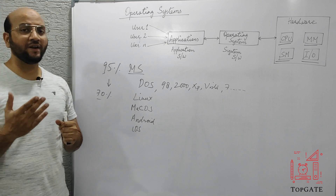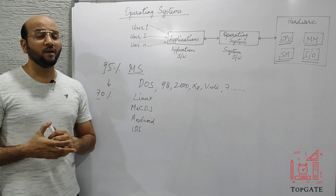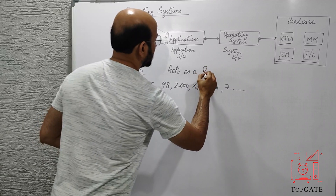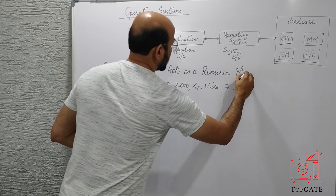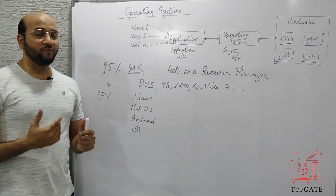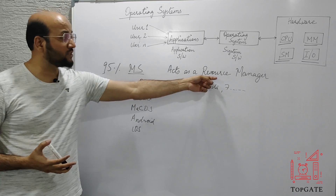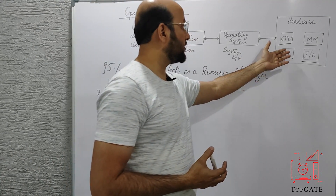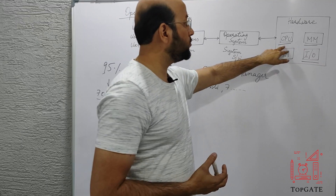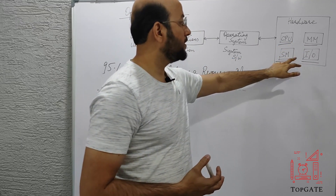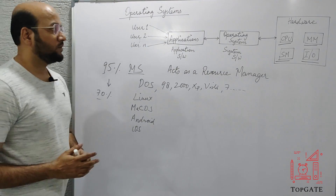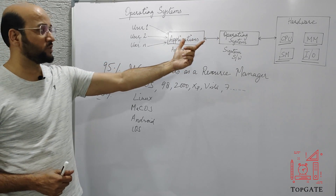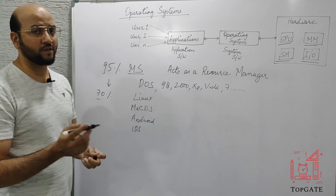If we talk about the more technical definition of operating system, then I would say that the operating system acts as a resource manager. The first question that comes to mind is: what are the resources which the operating system is actually managing? We have broadly classified the resources into four categories. The first category is the CPU, the second is the main memory, the third is the secondary memory, and the fourth is the input-output devices. It is the responsibility of the operating system to manage all these resources.